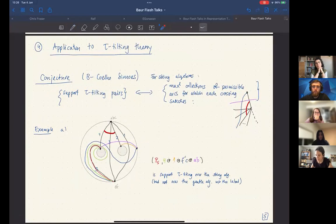But the crossings should involve a label where an arc goes partly over a label. And this is just one example of a support tau tilting pair for our running algebra. Thank you.